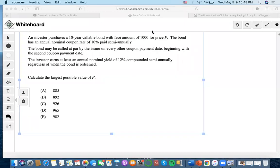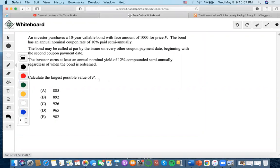So for this problem, it says an investor purchases a 10-year callable bond with base amount of $1,000 for price P. So bond pricing formulas involved nominal coupon rate, 10% paid semiannually.